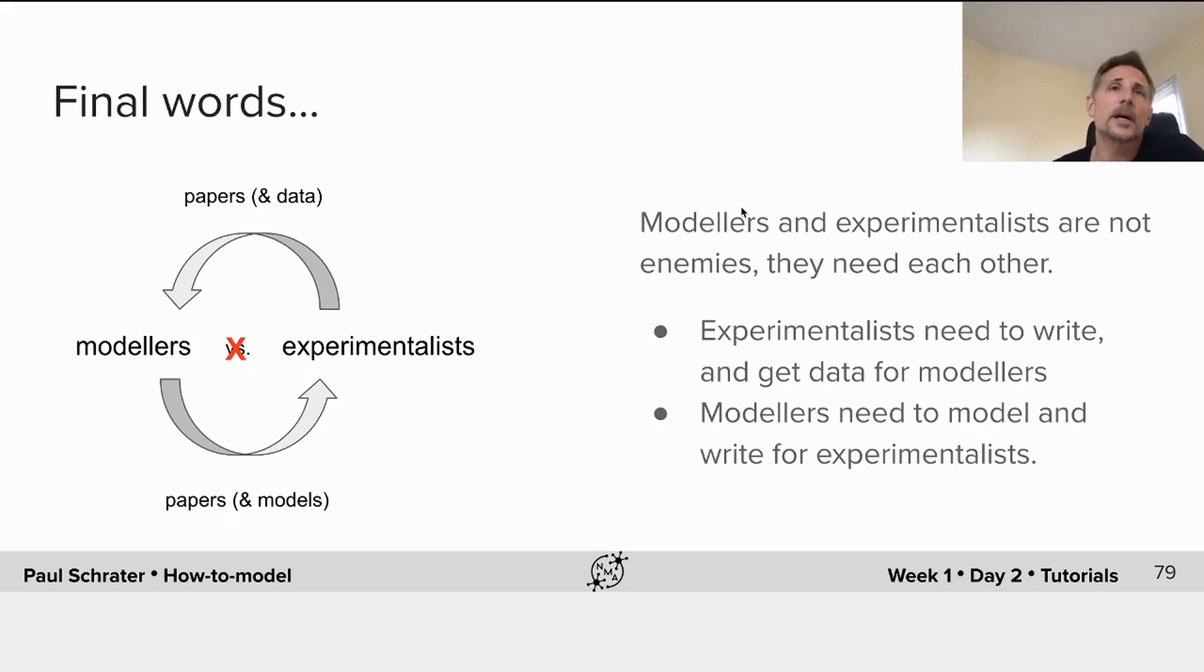If you write for other modelers, you're kind of missing the whole scientific project. So experimentalists need to write and get data for modelers. And modelers need to model and write for experimentalists. If experimentalists and modelers are working together and are writing for each other, then science actually improves.